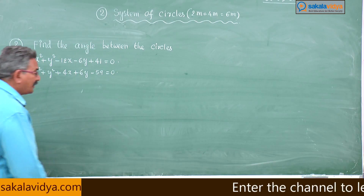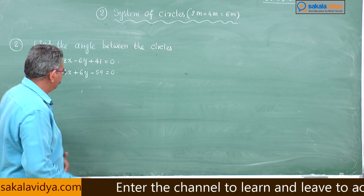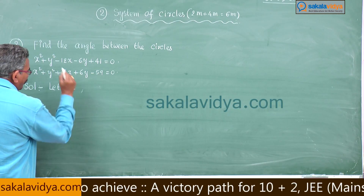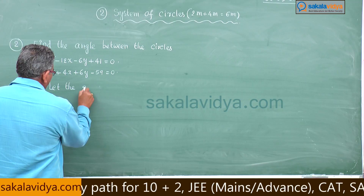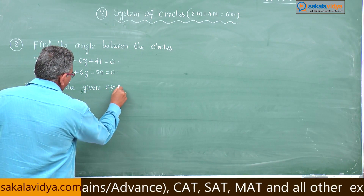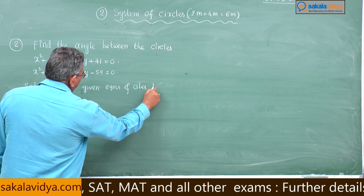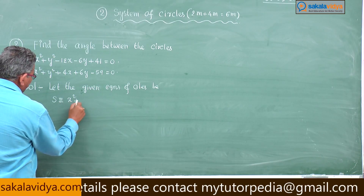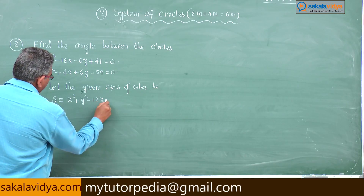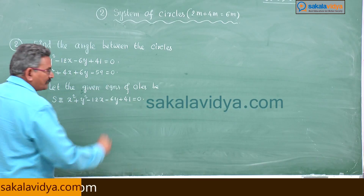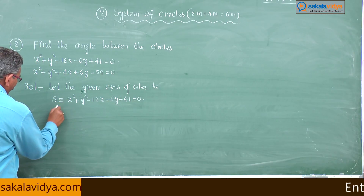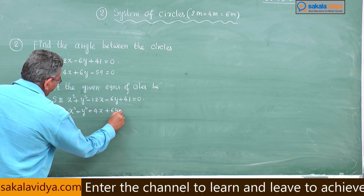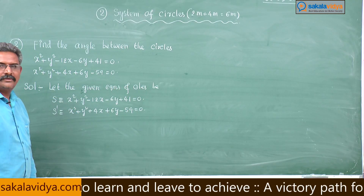So now let us come to the problem and solve it. Let the given equations of circles be: S equals x squared plus y squared minus 12x minus 6y plus 41 equals 0, and S' equals x squared plus y squared plus 4x plus 6y minus 59 equals 0.